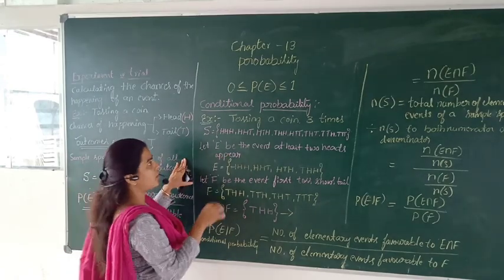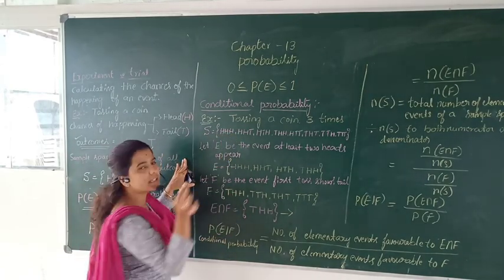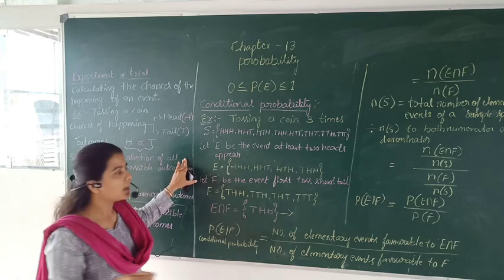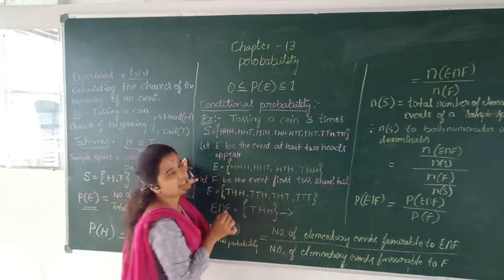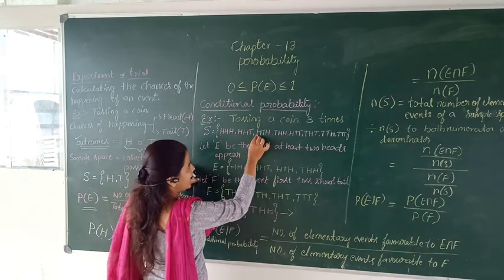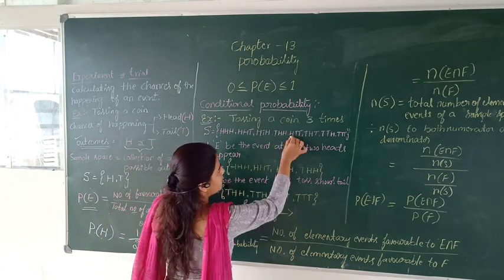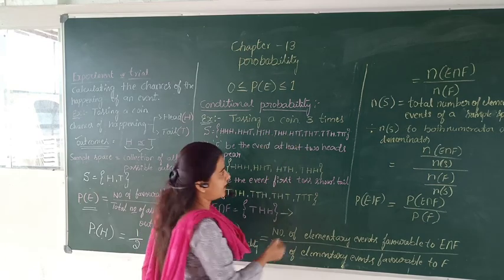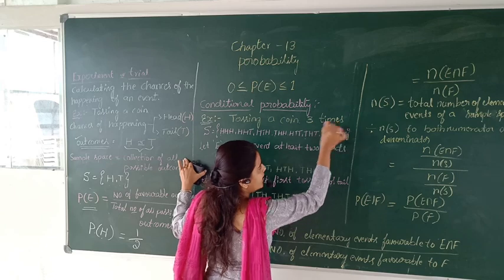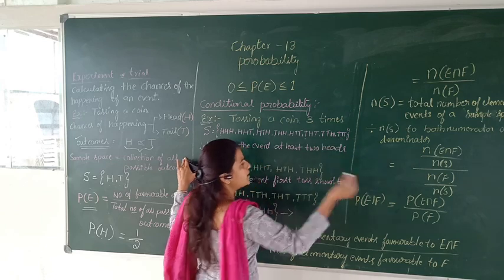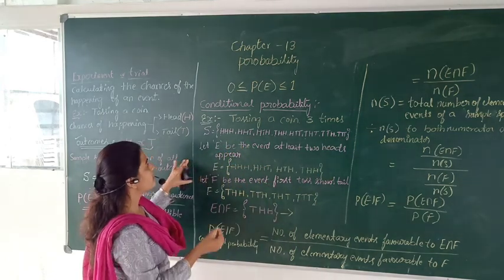After tossing a single coin three times, I may get all three tosses as head, or first two are head and third is tail, or head-tail-head, or tail-head-head, or first head and next two are tail, or tail-head-tail, or first two are tail and the third one is head, or all three trials are tail.